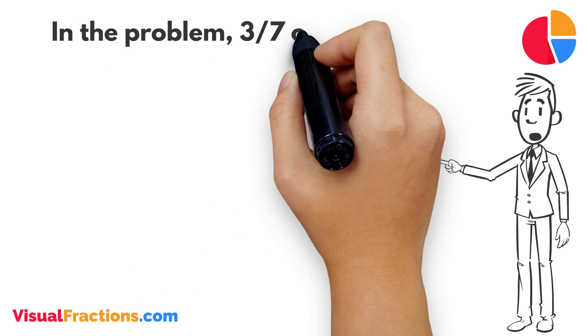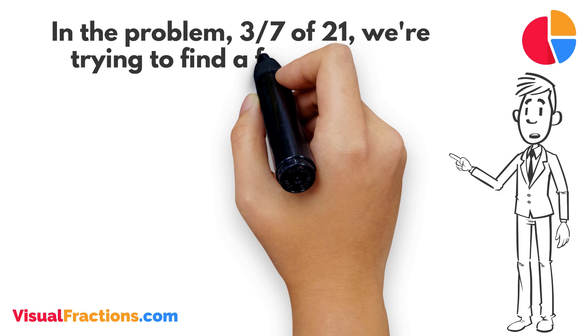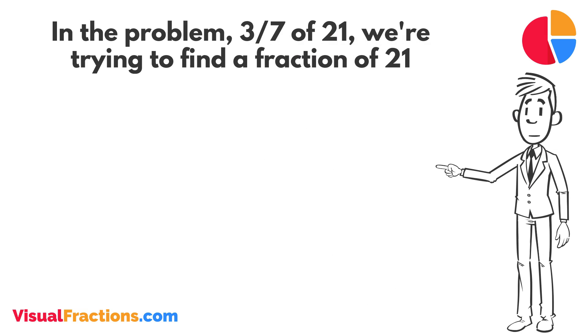In the problem, 3/7 of 21, we're trying to find a fraction of 21. Since we're only taking a part of it, we know our answer will be less than 21.